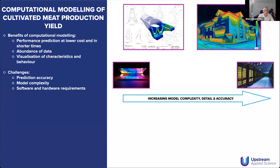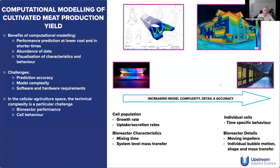With the benefits come some challenges. The thing you have to be careful about is how the accuracy of your prediction is tightly coupled to how complex your model is. In general, if your model is more complex, it has fewer assumptions, so you can expect higher accuracy — but that's coupled with an increasing need for more computational power. Simpler models you can hopefully run on your laptop, whereas with increasing complexity you might need considerably more powerful high-performance computing architectures and clusters. In the cellular agriculture space, there are particular challenges around complexity due to two aspects: bioreactors and cell behavior.